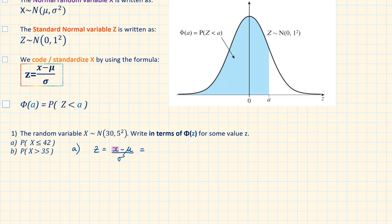Replacing the values, x is 42, the mean is 30, and the standard deviation is 5. This is equal to 2.4. So, the probability of X being less than or equal to 42 is equal to the probability of Z being less than or equal to 2.4, and this can also be written as Φ(2.4).